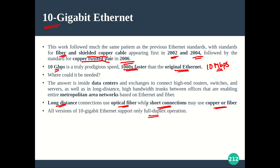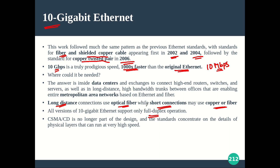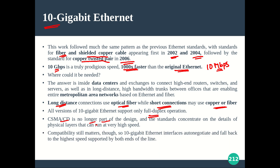All versions of 10 Gigabit Ethernet support full duplex operation only. Because it is for high-end applications, CSMA/CD is no longer part of the design — since we have full duplex, there is no need to complicate things. The standards concentrate on the details of the physical layer, which must support very high speeds. As you increase the speed at the data link layer, the physical layer must also support that.